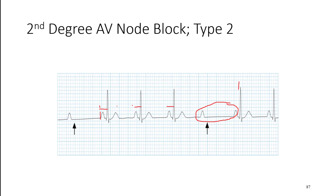In Type 2, before this dropout the PR interval stays about the same length — it does not get progressively longer before it drops out. This typically follows a consistent pattern just like Wenckebach. You'd get three conducted beats before one drops out, and then restart that cycle. These patients would probably feel the same symptoms — like skipping a beat — and on palpation you'll feel a dropped beat every fourth beat in this example.